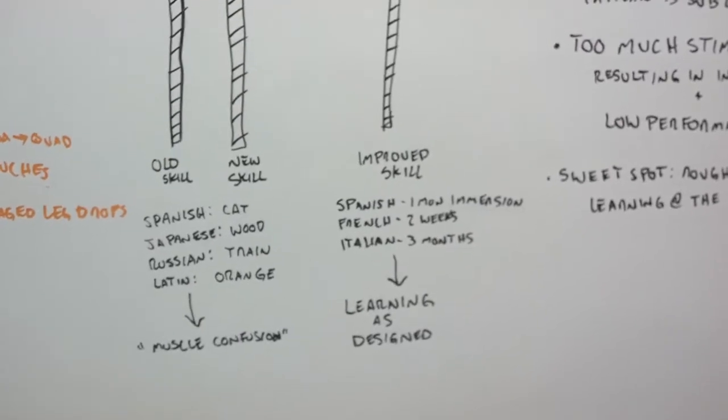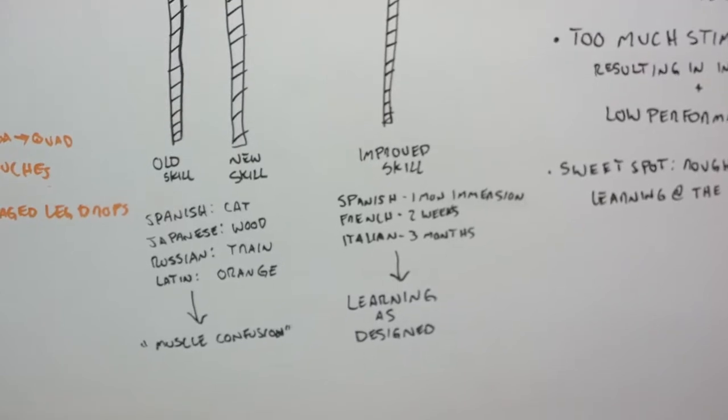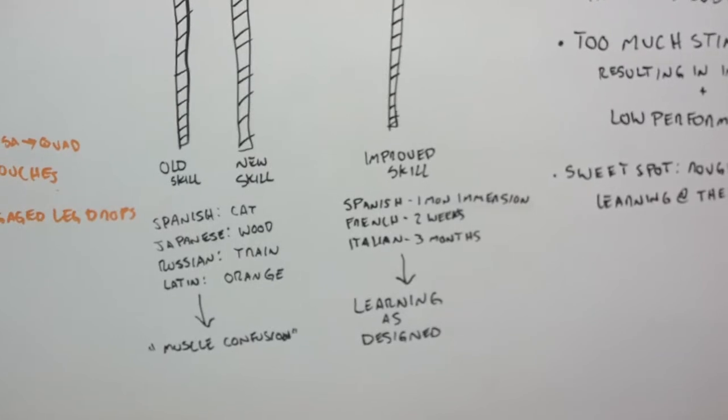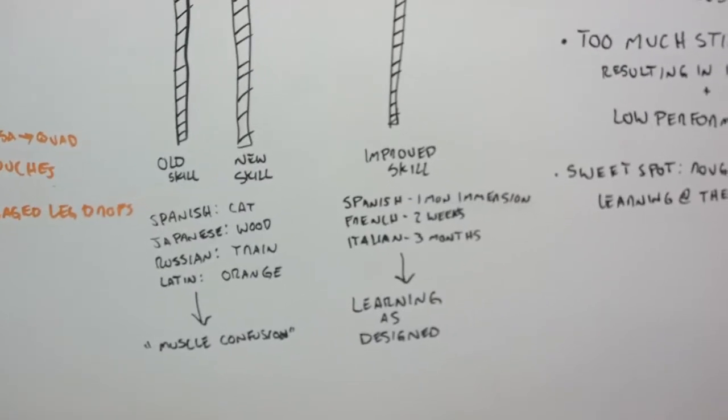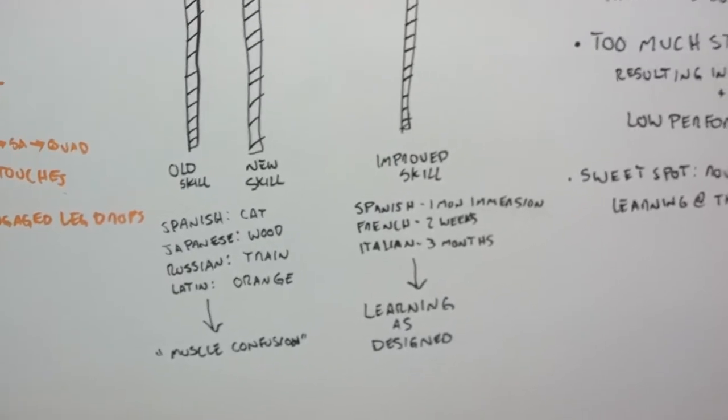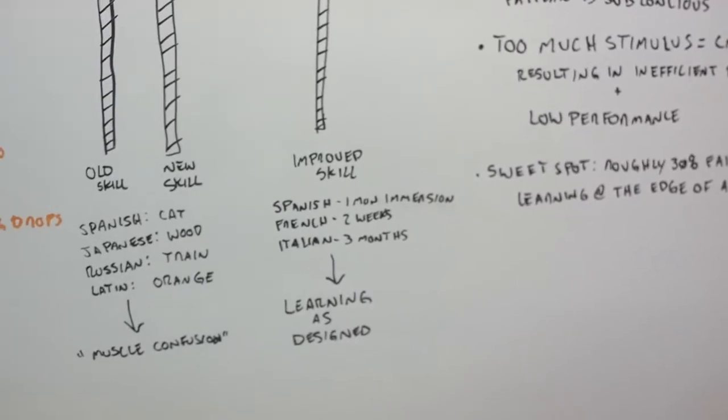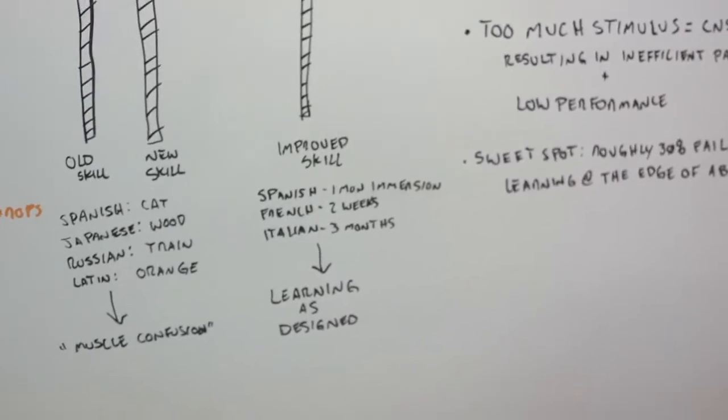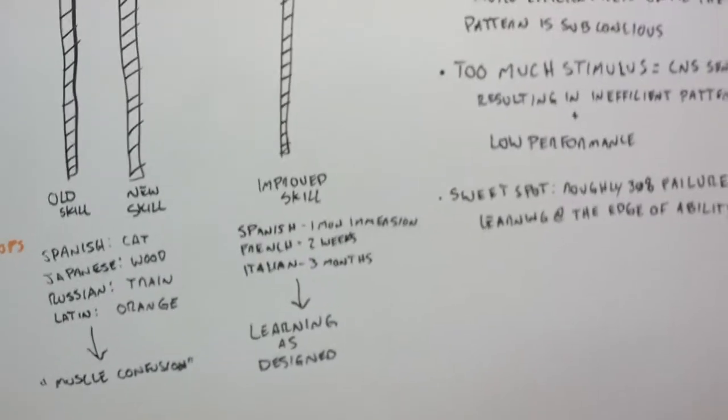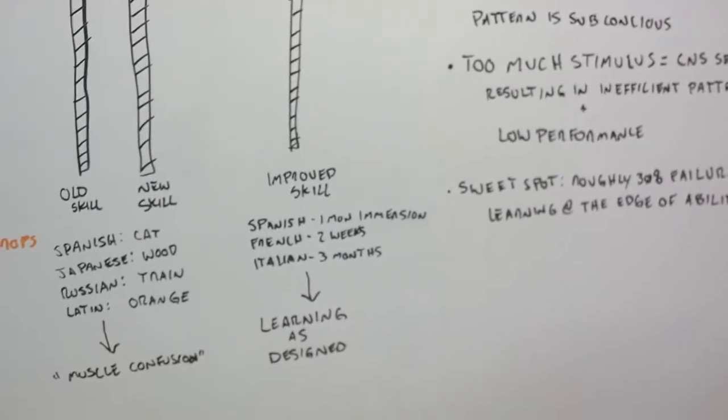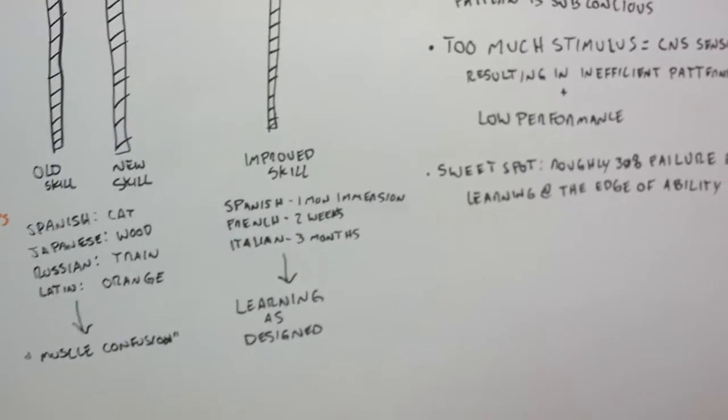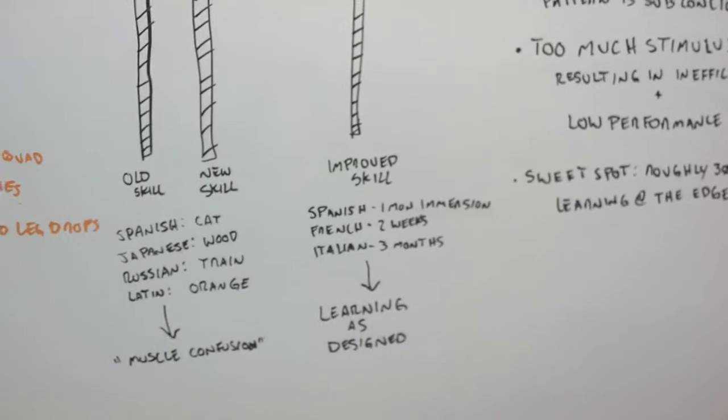So think of somebody who learns a word from Spanish, a word from Japanese, a word from Russian, and a word from Latin that are completely unrelated, but they learn one new word a day from each of those four languages. If they did that their entire life, how efficient would they be in any one of those? Probably not very. Versus the person that learns Spanish, French, and Italian, and is immersed in it for a month in Spanish, two weeks in French, and three months in Italian, since those are very similar skills, you're basically branching off a main Latin root. Plus you're getting higher reps, higher volume, which is how the nervous system is designed to learn.